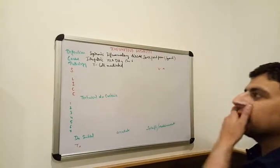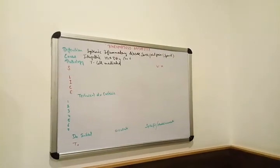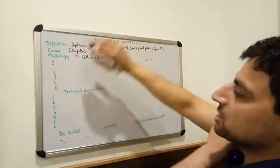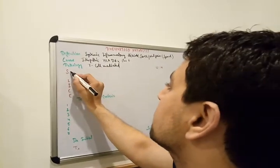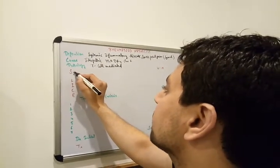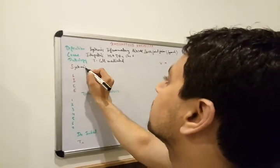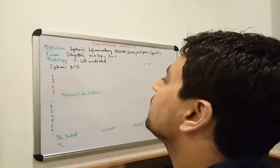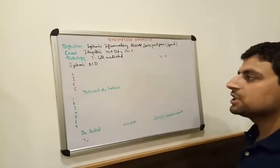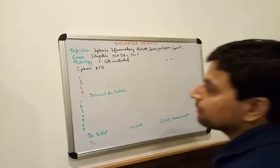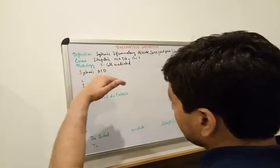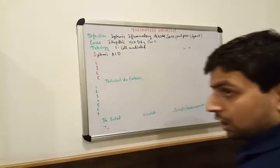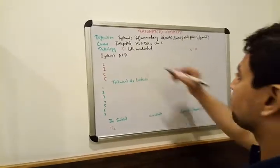Now I will explain how to remember the signs and symptoms using the mnemonic SLICE. S represents systemic. Systemic ACD — anemia of chronic disease, which is normocytic and normochromic anemia.